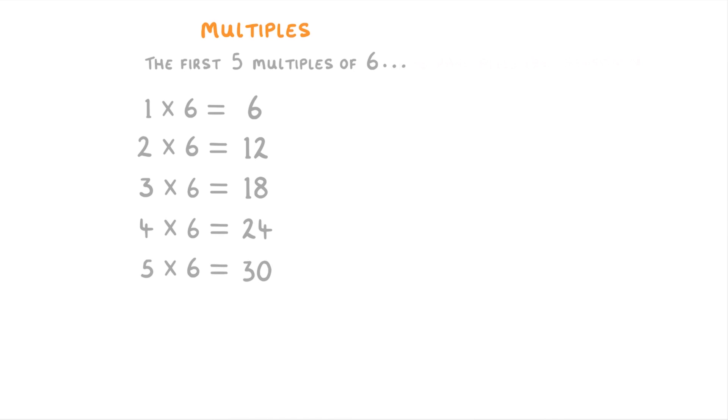So the next ones would be twenty-four and thirty. Because of this, all the multiples of a number will be divisible by that number without any remainder. For example, 18 divided by 6 is 3 with no remainder, so 18 must be a multiple of 6. Whereas if we looked at 19, 19 over 6 is 3 with a remainder of 1, so it's not a multiple of 6 because it gave a remainder.